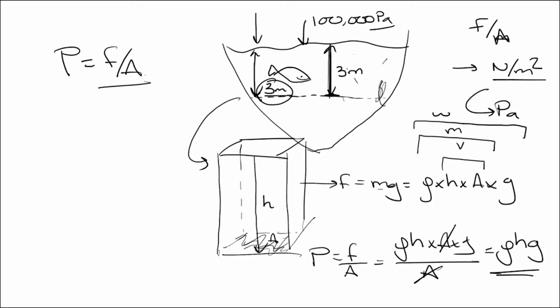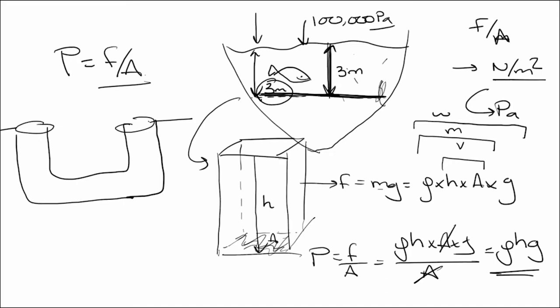The pressure generated by a liquid depends on the height of the liquid above that point. If you move along the same depth, the pressure will be the same because you have those three meters of water. Even if the body of water is connected via an underground pipe, as long as the two points are at the same depth, they will have equal pressure.